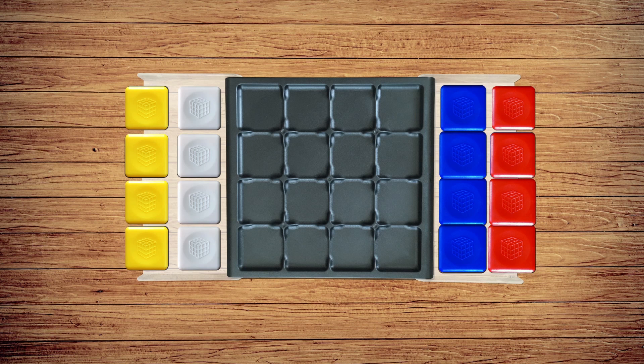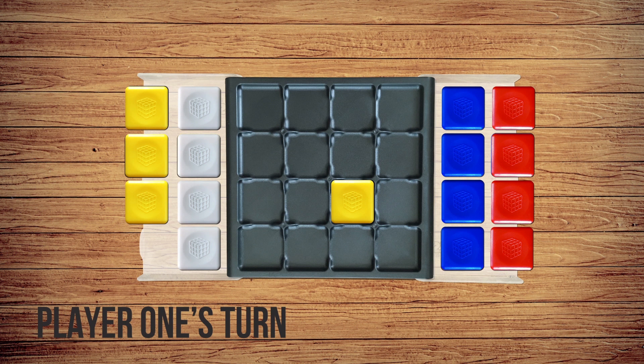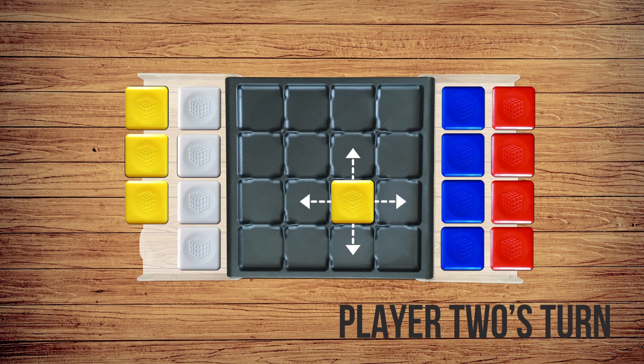On Player 1's first turn, Player 1 places a tile anywhere they'd like, either side face up. It's now Player 2's turn. First, Player 2 flips one of their opponent's tiles, reversing its color and moving it to an adjacent vacant square, horizontally or vertically.